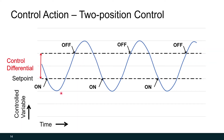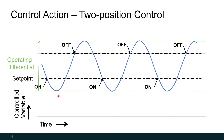You'll notice that our controlled variable has peaks and valleys much wider than our control differential, as shown with the green lines. This is called the operating differential — what your space temperature would actually be fluctuating between during our control cycle. If setpoint was 70 and control differential was 72, we might have an operating differential from 69 to 73. If the control differential is too wide, the operating differential gets wider and occupants may not be comfortable. But if the control differential is too small, we turn equipment on and off much more frequently, leading to continued wear and perhaps early replacement.